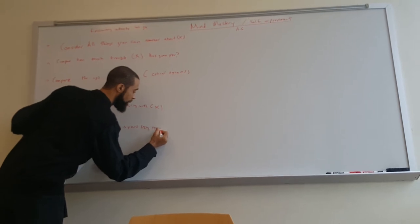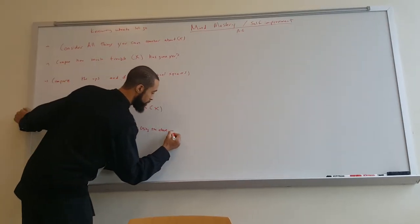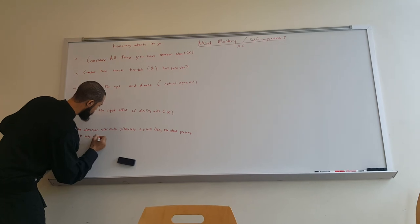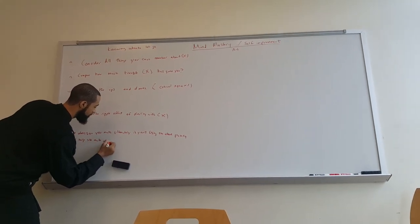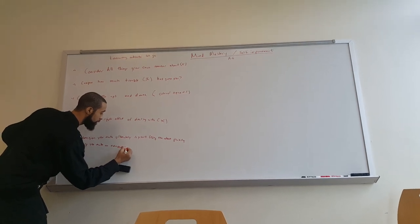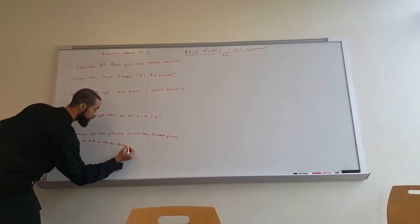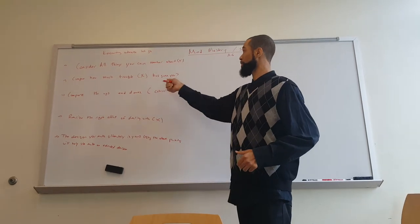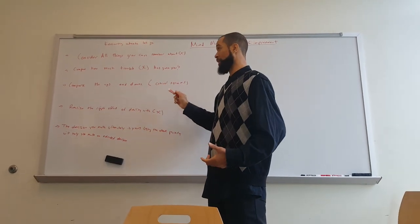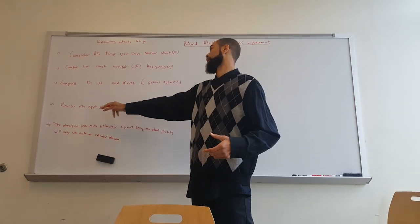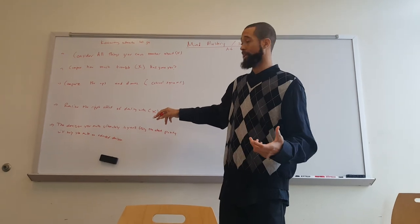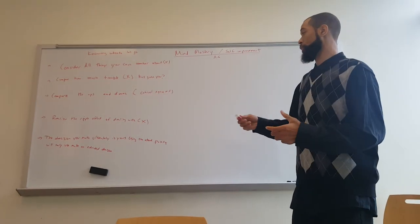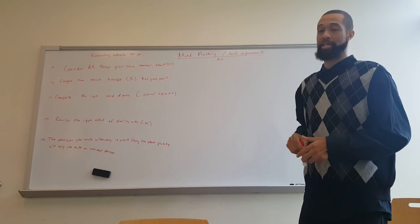So using the above points will help you make an educated decision. Again, consider all the things you can remember about X. Compare how much trouble X is giving you. Compare the ups and the downs. Use the critical squares we discussed before. Realize the ripple effect of dealing with X, positive and negative, around people around you. And again, once you think about all those things, the decision you make is yours, nobody else's. Using the above points will help you make an educated decision.